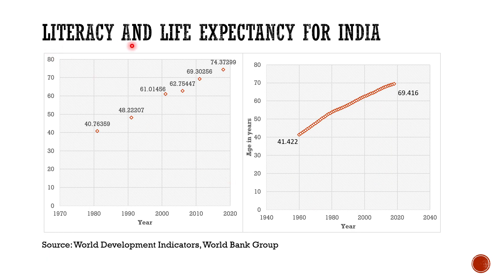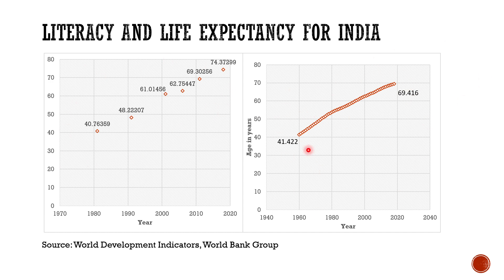Regarding literacy rates and life expectancy for India — an educated and healthy population leads to better opportunities and beneficial human capital. Literacy rates have gone through a drastic change, rising from 40% to 74% in 2018. Life expectancy has also changed dramatically, from a mere 41 years to 69 years at birth. This indicates that better health facilities and better education are now being provided to the masses, though the situation still remains average compared to advanced economies.